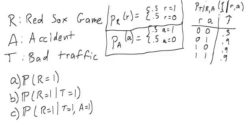Now whether or not there is traffic depends on whether there is a game and whether there is an accident. So this table shows the probability that T is 1 for each configuration of R and A. If they are both 0, then the probability of having bad traffic is 0.3.